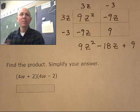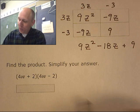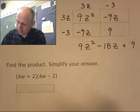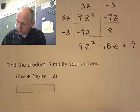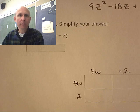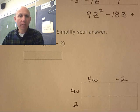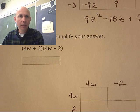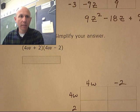Here's another one. This one, something interesting is going to happen. Watch when we do this. (4w + 2)(4w - 2). There's my box. Can we get all of that? There.